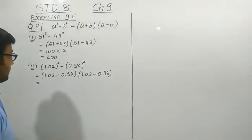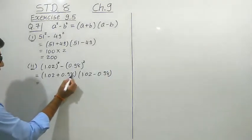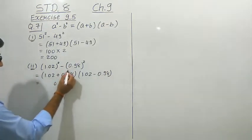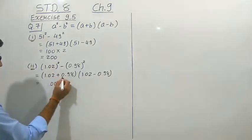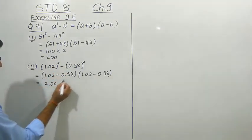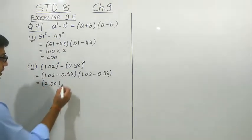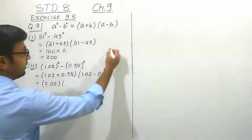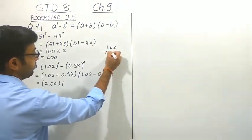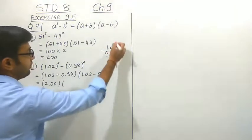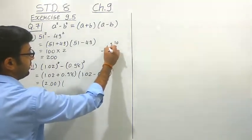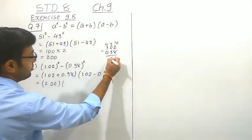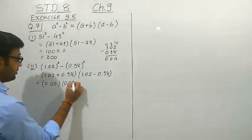The addition of 1.02 plus 0.98: 8 plus 2 is 10, carry 1; 9 plus 1 is 10, carry 1; 1 plus 0 plus 1 is 2. So the addition gives 2. For the subtraction, 1.02 minus 0.98: we borrow to get 12 minus 8 equals 4, and 9 minus 9 equals 0, giving 0.04.